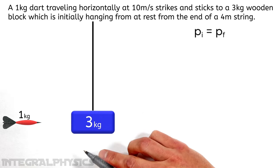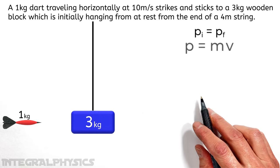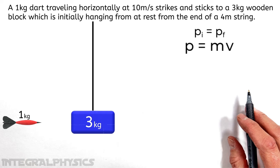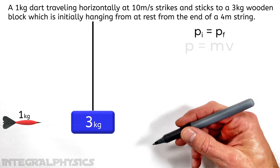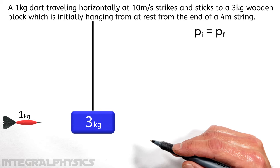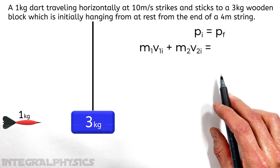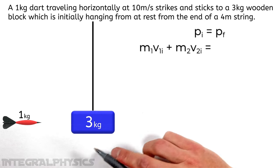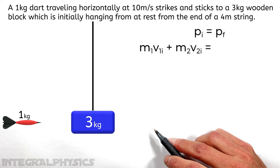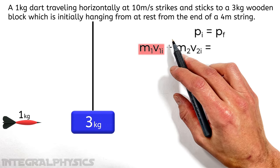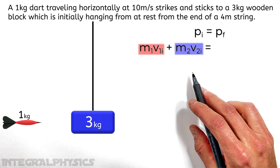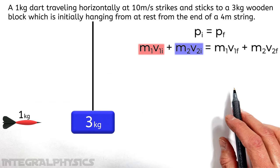Now the linear momentum of a single object is given by the equation P equals MV. But here we have two objects, the dart and the block. So the total momentum before the collision is going to be the sum of the two individual momentum. That is MV for one object, plus MV for the other object. And we have a similar function for the final momentum.